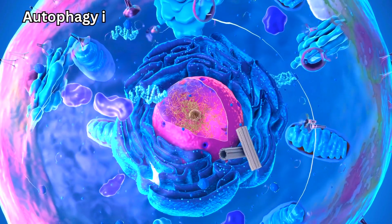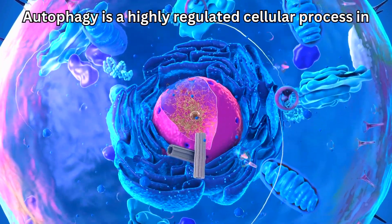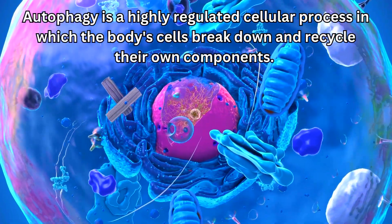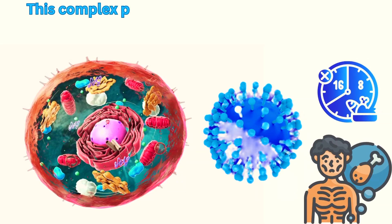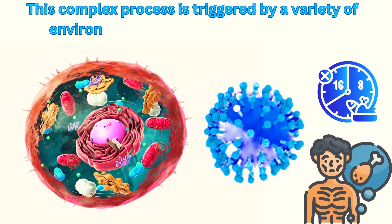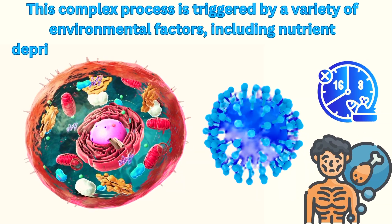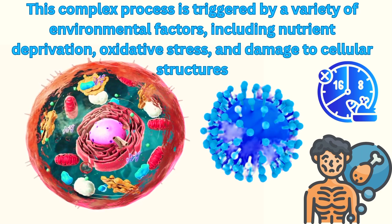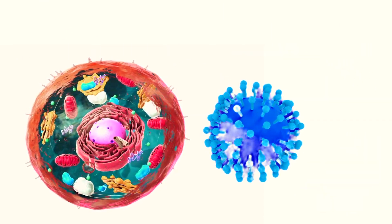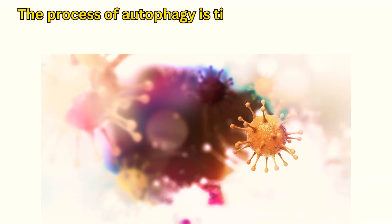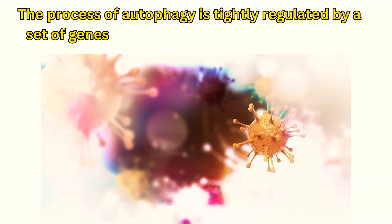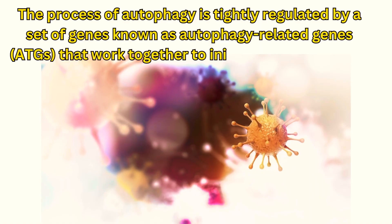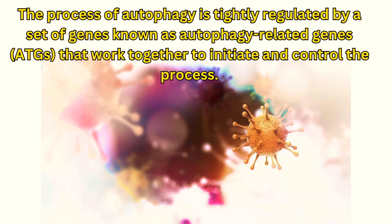Autophagy is a highly regulated cellular process in which the body's cells break down and recycle their own components. This complex process is triggered by a variety of environmental factors, including nutrient deprivation, oxidative stress, and damage to cellular structures. The process of autophagy is tightly regulated by a set of genes known as autophagy-related genes, or ATGs, that work together to initiate and control the process.